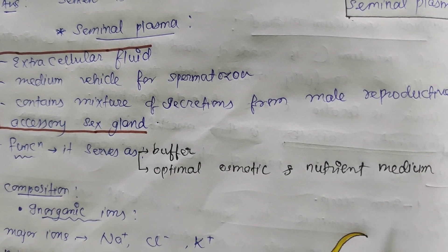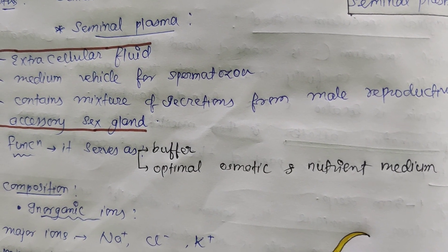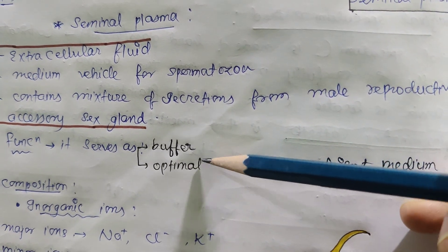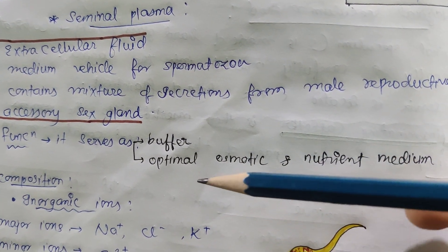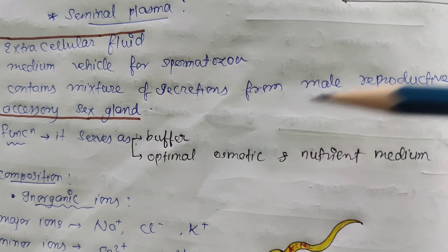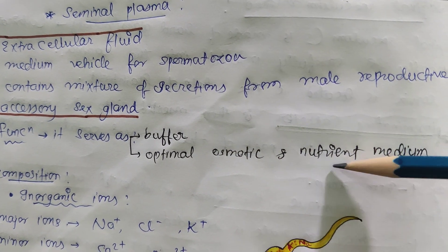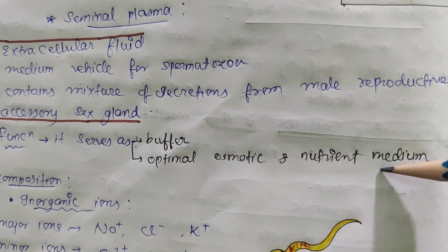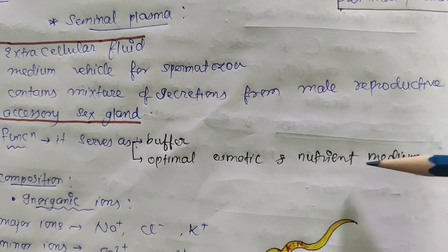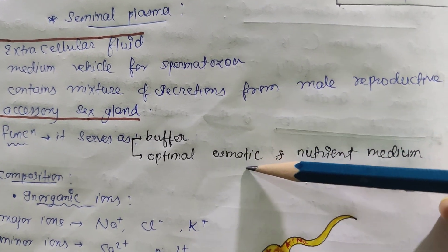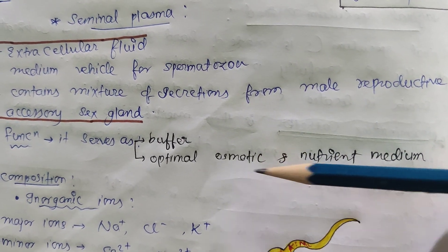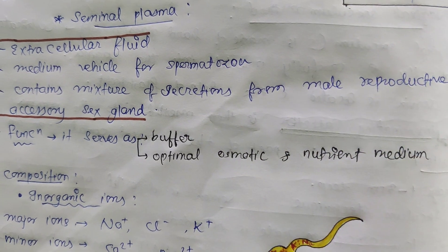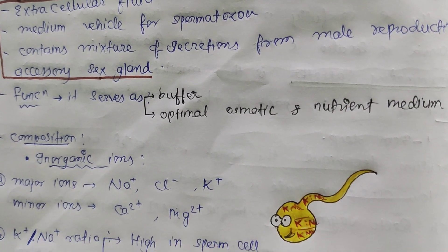The function of seminal plasma is that it serves as a buffer and is a very good nutrient medium for spermatozoa. It also maintains osmotic pressure.